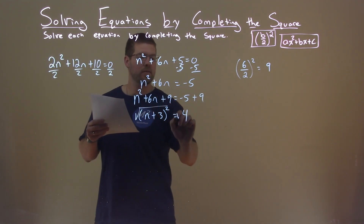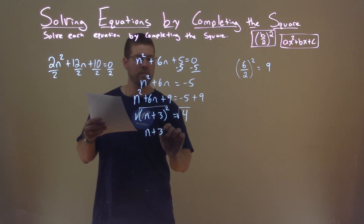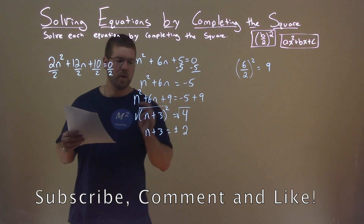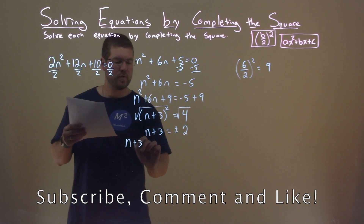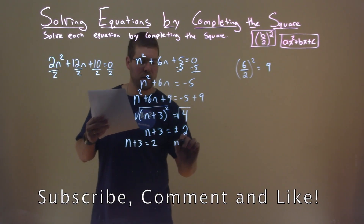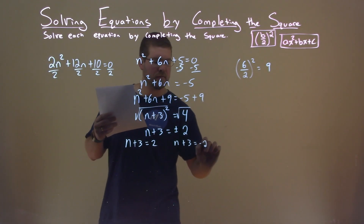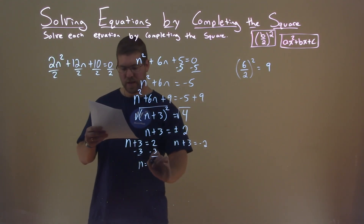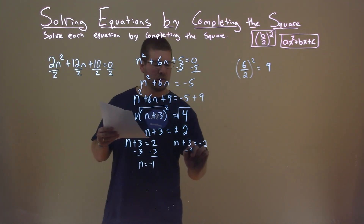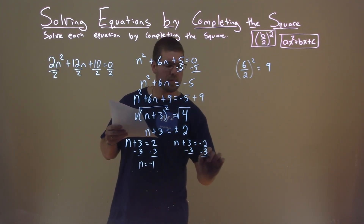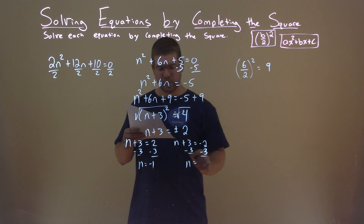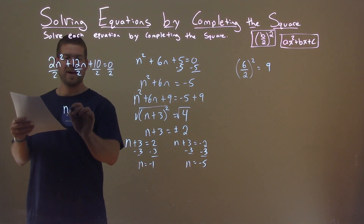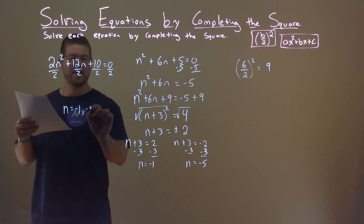Taking the square root of both sides: n plus 3 equals plus or minus the square root of 4, which is 2. Breaking into two equations: n plus 3 equals positive 2, and n plus 3 equals negative 2. Subtracting 3 from both sides: n equals 2 minus 3, which is negative 1. Doing it again: n equals negative 2 minus 3, which is negative 5. My two solutions are n equals negative 1 and negative 5.